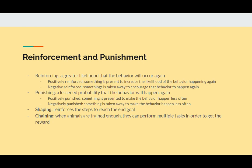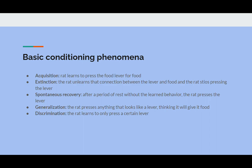Here are some basic conditioning phenomena that describe the process of operant conditioning. First is acquisition — the rat learns to press the food lever for food. Extinction happens when the rat unlearns the connection between the lever and the food and stops pressing the lever. Spontaneous recovery happens after a period of rest without the learned behavior, and the rat presses the lever again. Generalization is when the rat presses anything that looks like a lever, thinking it will give food. And finally, discrimination — in operant conditioning, the rat learns to only press a certain lever.